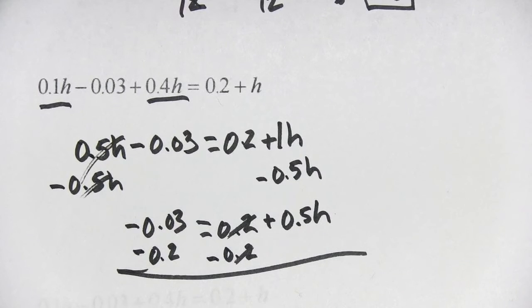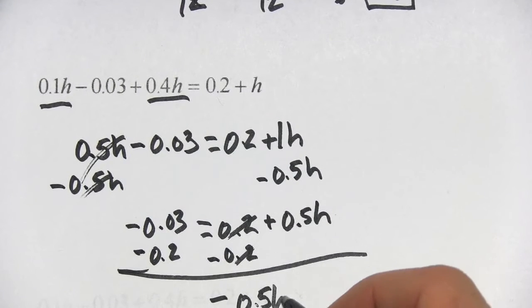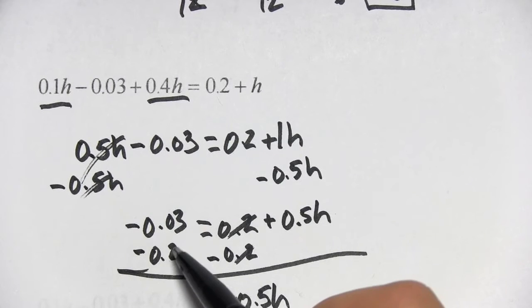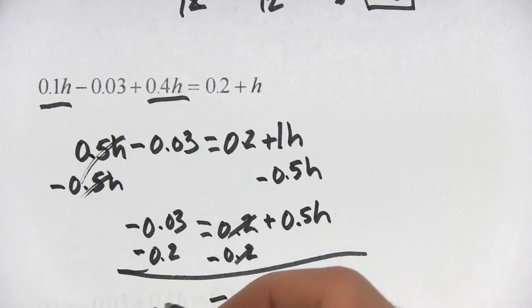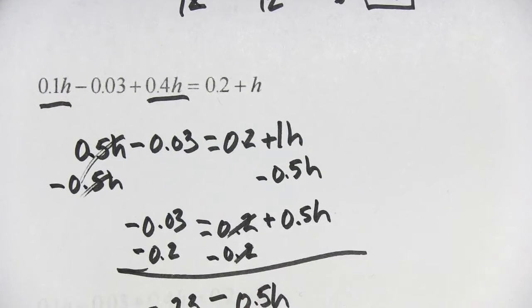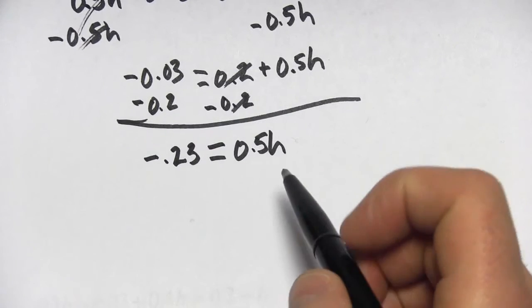Over here, those disappear. I'm just left with 0.5h. And over here, a negative 0.03 and a negative 0.2 is going to be a negative 0.23.